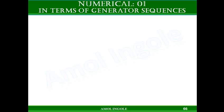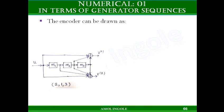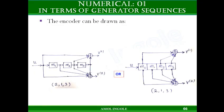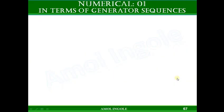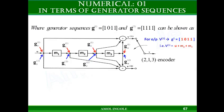From the generator sequence you can also draw the encoder diagram. The encoder diagram will be similar to the one discussed in the earlier video. You can see there are 3 memory units. The generator sequence for output 1 is 1, 0, 1, 1, and for output 2 the generator sequence G2 is 1, 1, 1, 1 — all 1s. If the circuit diagram has to be drawn, you can draw 3 memory units with 2 outputs.